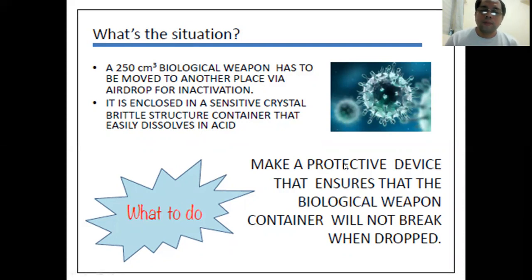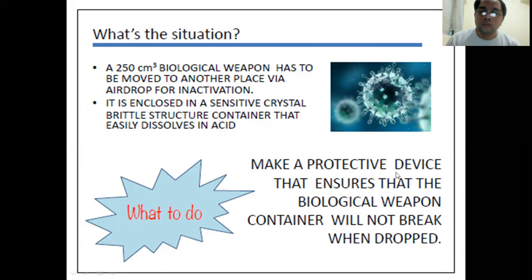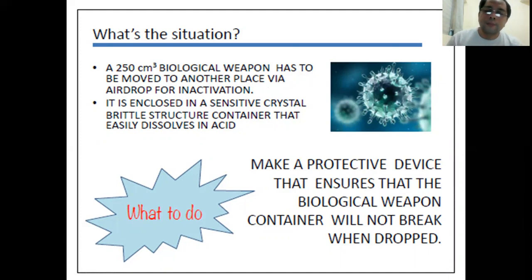We need to make a protective device to ensure the biological weapon does not spill into the air. If it becomes airborne and we inhale it, it will get into our lungs and we will die. Deactivating the weapon by air-dropping it requires placing it in a protective device, so that the biological weapon container will not break when dropped. That is what you will build — a protective device ensuring the container survives the drop.